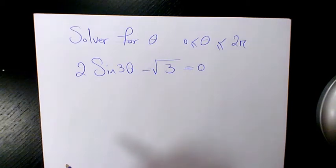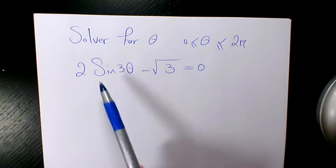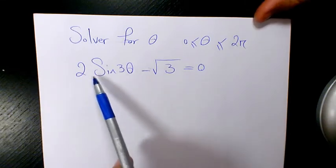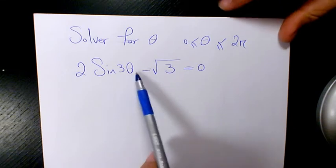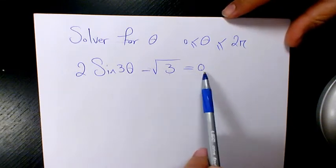What's up guys, this is Massey. Welcome to another video. In this video I want to solve a trigonometric equation which is 2 times sine 3θ minus root 3 equals to zero.